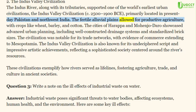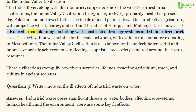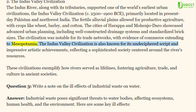The fertile alluvial plains allowed for productive agriculture, with crops like wheat, barley, and cotton. The cities of Harappa and Mohenjo-daro showcased advanced urban planning, including well-constructed drainage systems and standardized brick sizes. The civilization was notable for its trade networks, with evidence of commerce extending to Mesopotamia. The Indus Valley Civilization is also known for its undeciphered script and impressive artistic achievements, reflecting a sophisticated society centered around the river's resources.